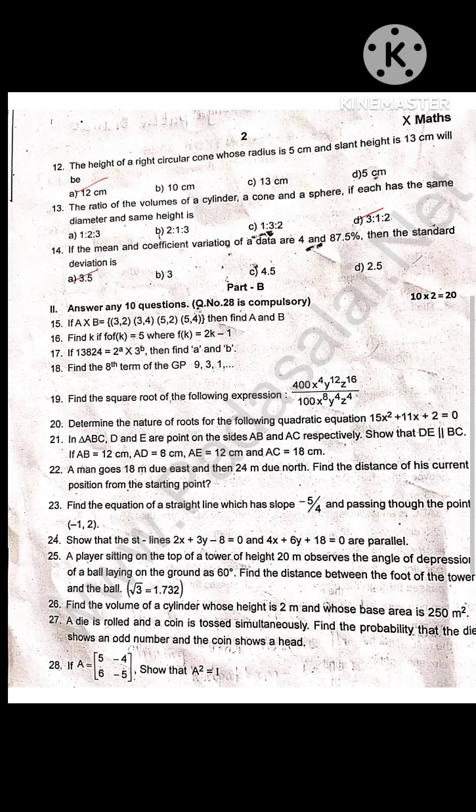The ratio of the volumes of a cylinder, a cone and a sphere, if each has the same diameter and same height is 3 is to 1 is to 2.